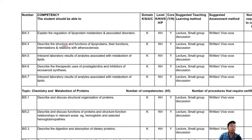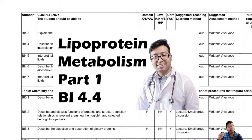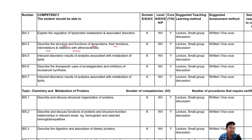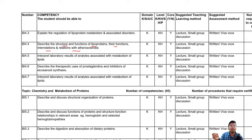This competency says: describe the structure and function of lipoproteins, their function, interrelation, and relation with atherosclerosis. In the last class, we covered chylomicrons rich in TG, VLDL, IDL, and LDL. Today we will cover HDL, reverse cholesterol transport, how it prevents heart disease, lipotropic factors, fatty liver, and the effect of diet.